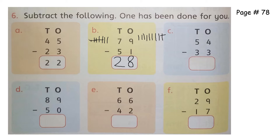Now we have to subtract three from four: one, two, three, four — cut three lines. What is left? One. Now we have to subtract the tens: one, two, three, four, five, and we have to cut three tens.